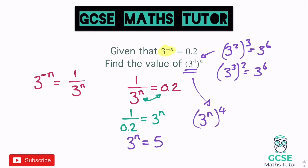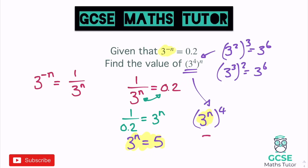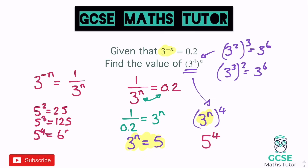Since we know 3 to the power of n equals 5, we can substitute that in: the expression becomes 5 to the power of 4. Working that out: 5 squared is 25, 5 cubed is 125, 5 to the power of 4 is 625. So our final answer is 625.